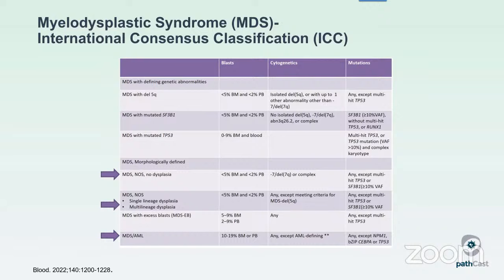One category that exists in the ICC but not the WHO is MDS without dysplasia — cases defined by the presence of a cytogenetic abnormality, namely deletion 7 or 7q or a complex karyotype. In the WHO, these cases would be referred to as CCUS, clonal cytopenia of uncertain significance, because the WHO still requires the presence of morphologic dysplasia for MDS. The ICC still requires indicating whether the dysplasia is single lineage or multilineage, which I think is good practice.